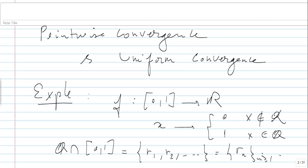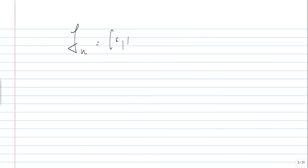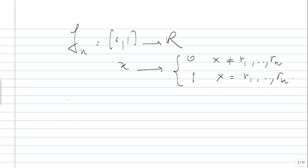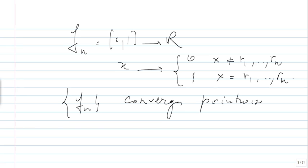What you do is define Fₙ from [0,1] into ℝ such that it gives 0 if x is different from r₁,...,rₙ, and 1 if x equals r₁,...,rₙ. Then it's very easy to see that the sequence Fₙ converges pointwise to F.